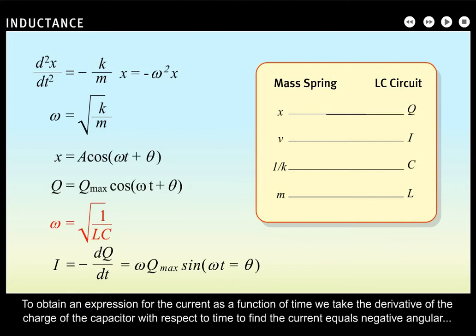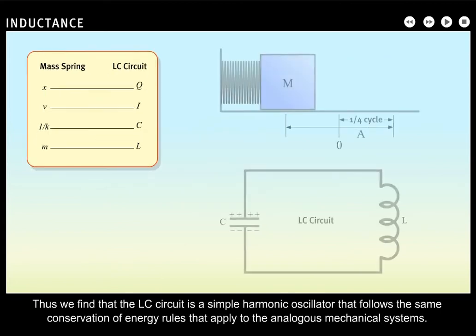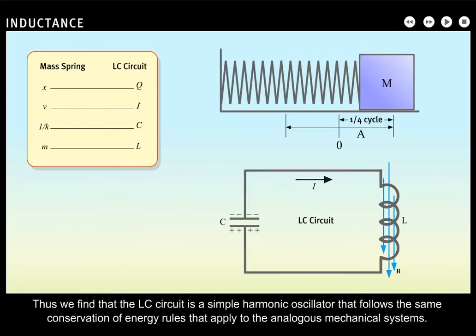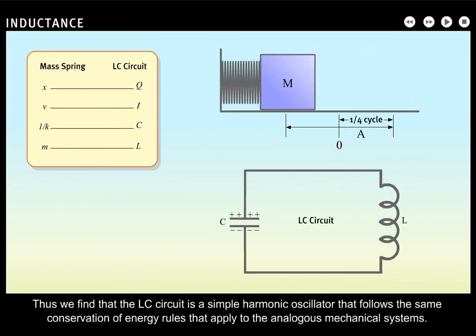To obtain an expression for the current as a function of time, we take the derivative of the charge of the capacitor with respect to time to find the current equals negative angular frequency times maximum charge times the sine of the angular frequency times time plus the phase constant theta. Thus, the LC circuit is a simple harmonic oscillator that follows the same conservation of energy rules that apply to the analogous mechanical systems.